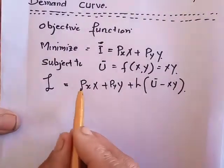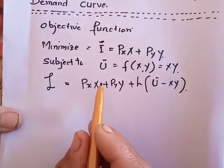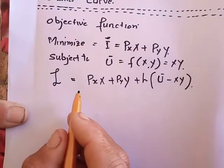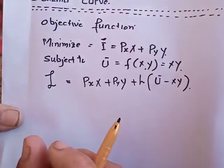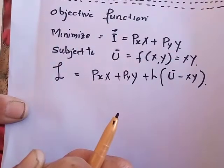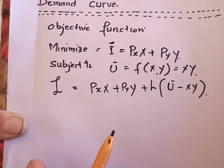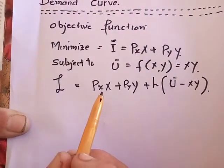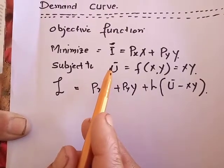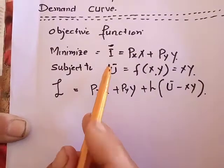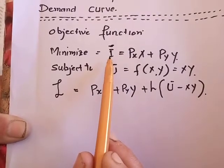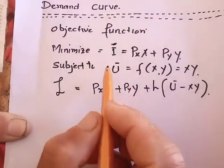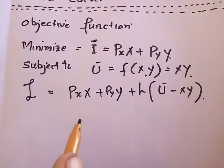After forming the composite function in this fashion, we then take first-order differentials with respect to x, and then with respect to y, setting each to zero. This technique is called the optimization technique. In the optimization technique, we either maximize a function or minimize a function. So if utility is the objective function, then we maximize utility. But here, you can see that the objective function is the expenditure function, which the consumer wants to minimize.